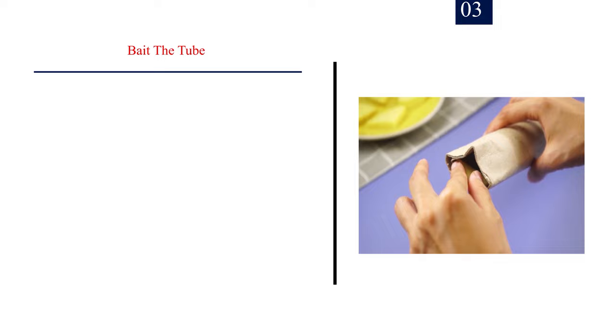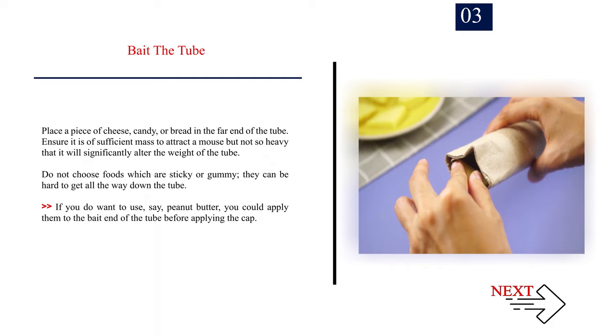Number 3: Bait the tube. Place a piece of cheese, candy, or bread in the far end of the tube. Ensure it is of sufficient mass to attract a mouse, but not so heavy that it will significantly alter the weight of the tube. Do not choose foods which are sticky or gummy; they can be hard to get all the way down the tube. If you do want to use, say, peanut butter, you could apply them to the bait end of the tube before applying the cap.